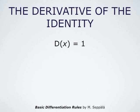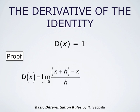The derivative of the identity function x is 1, and that also follows immediately from the definition of the derivative. The derivative of the identity function x is the limit as h approaches 0 of (x + h − x) divided by h. But x + h − x is simply h, so this is the limit of h divided by h as h approaches 0. But h cancels out, so this is the limit of 1 as h approaches 0, which is 1. So we have proven the identity rule.